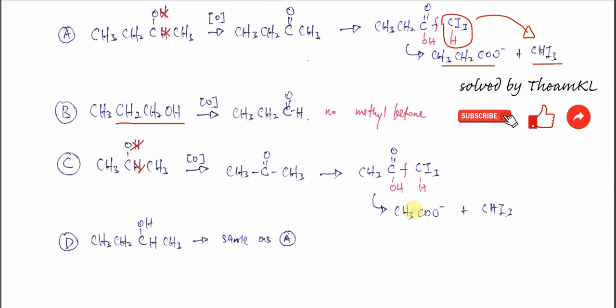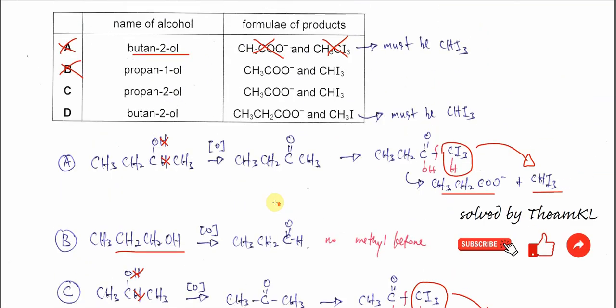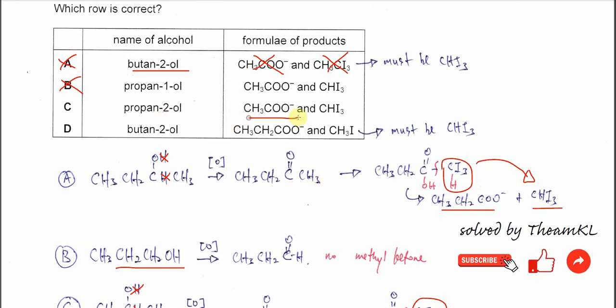So it will form the iodoform and this ethanoic acid. Eventually it will further react with sodium hydroxide to form sodium ethanoate.